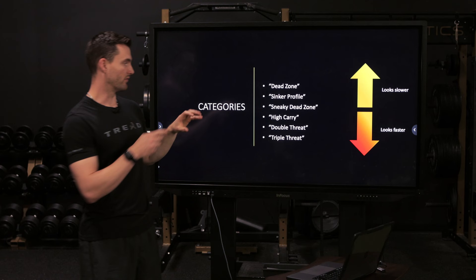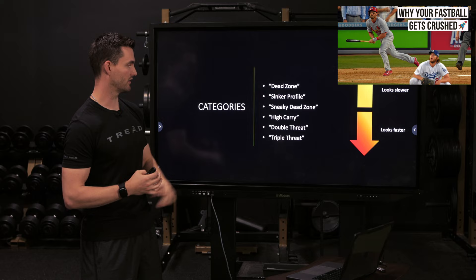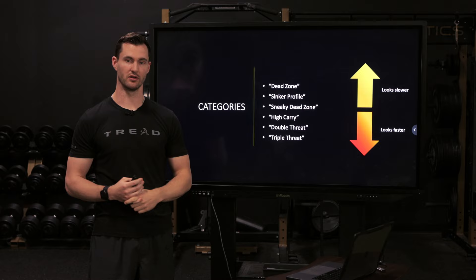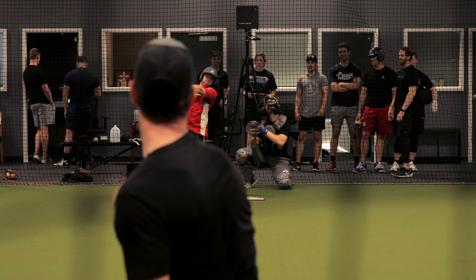Breaking it into classifications: dead zone fastballs are going to look slower, high carry fastballs are going to look faster. We'll touch on examples including what I'm calling a sneaky dead zone fastball, a double threat, and a triple threat fastball to show how you can create this high perceived velocity effect. Take a look at this clip, watch a couple throws, and think in your head how hard you'd assume this pitch is based on your IDAR alone.